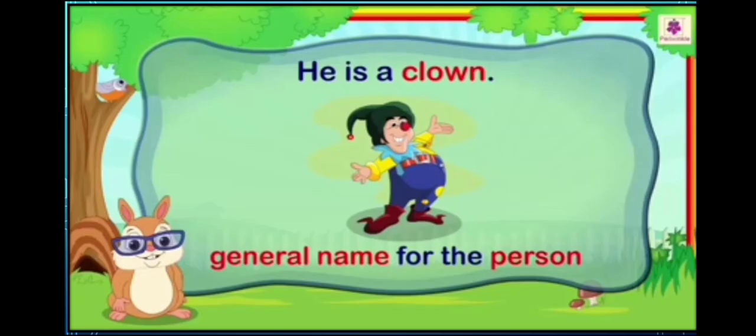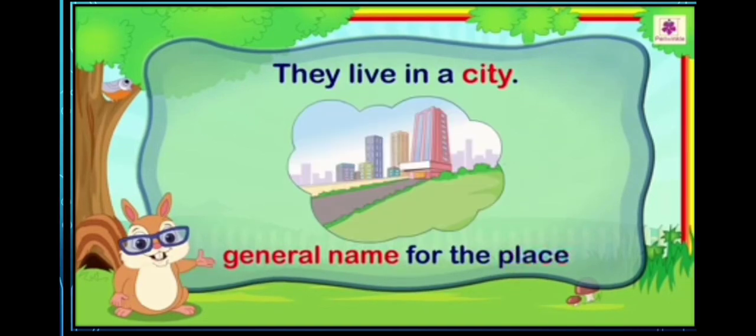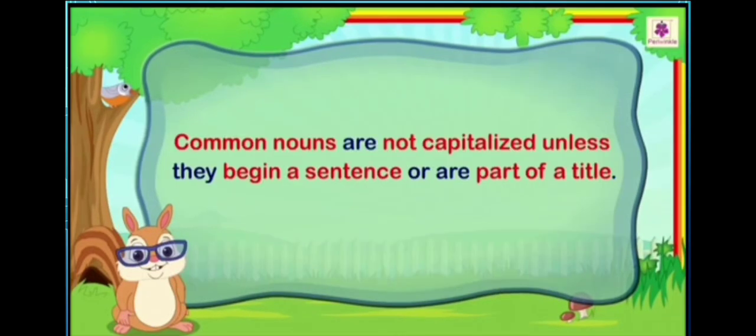Let's see some more examples. He is a clown. In this sentence, we are talking about a clown. Clown is a general name for the person. Let's see the second example. They live in a city. In this sentence, we are talking about a city. City is a general name for the place. One more important thing you need to keep in your mind is that common nouns are not capitalized unless they begin a sentence or are part of a title.